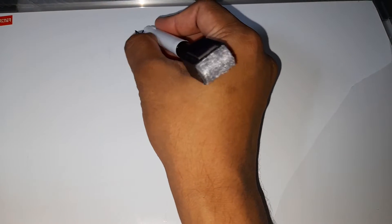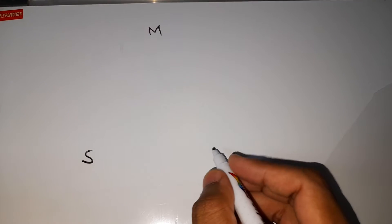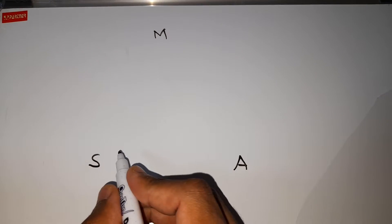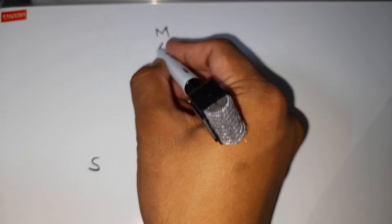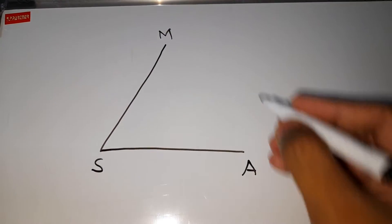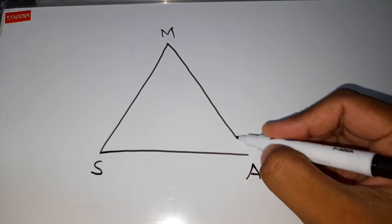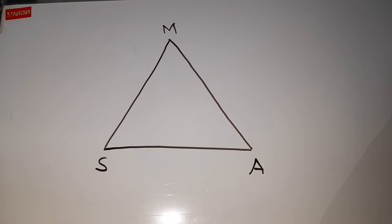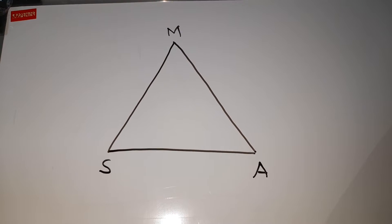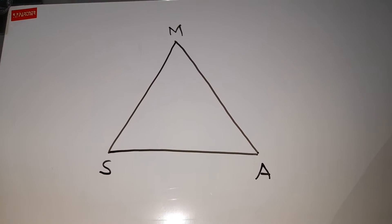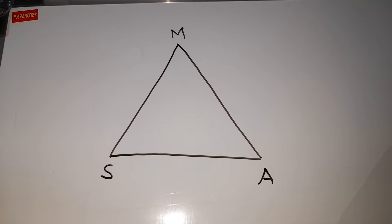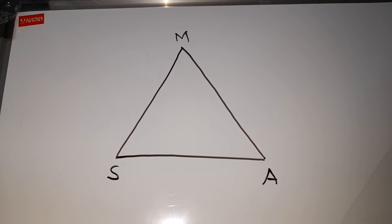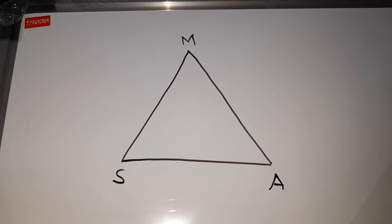Here we have a word problem which says that Maitali, Shaila and Ajay are friends and they are staying at three different locations, meaning their house locations form a triangle. It can be an acute angle triangle, a right angle triangle, or an obtuse angle triangle. There is a toy shop which is equidistant from all the houses.